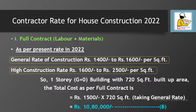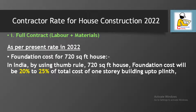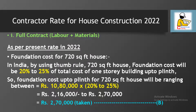This rupees 10 lakh 80,000 is only for ground floor construction. Now you have to calculate the foundation cost for your 720 square feet house. In India, the foundation cost will be 20 to 25 percent of the total cost of one-storey ground floor up to plinth level. So the foundation cost up to plinth comes to rupees 10 lakh 80,000 multiplied by 25 percent, which is about rupees 2 lakh 70,000.